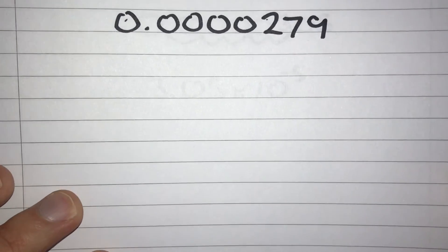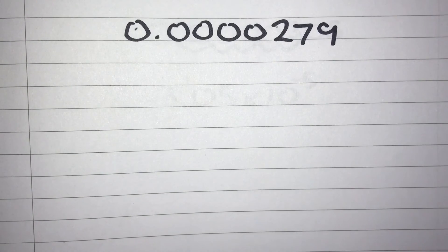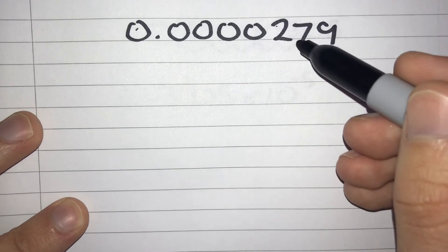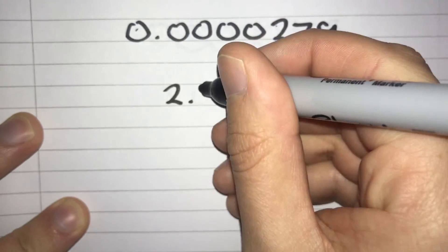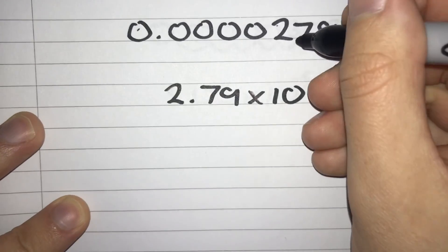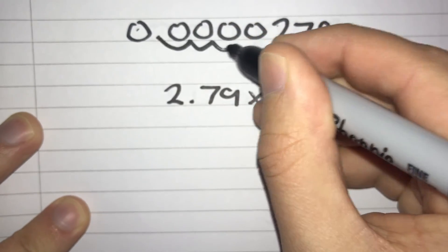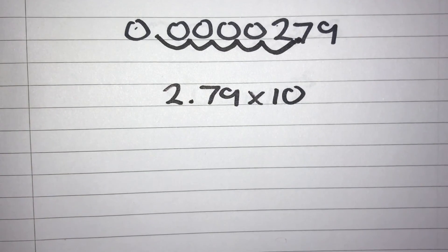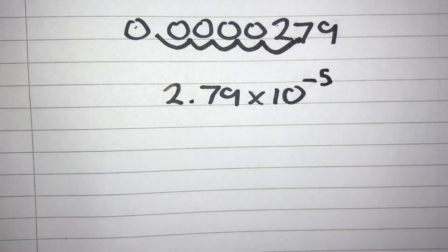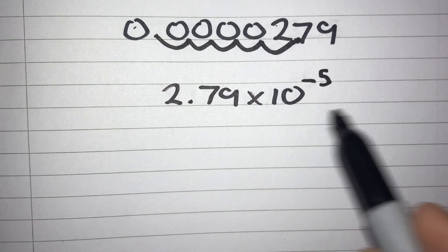Here's one more example — this time we've got a really small decimal number to write in standard form. We move our decimal point to just after our first significant figure, which is after this 2, giving us 2.79. Our decimal point started here and has ended up just after this 2. Counting the spaces: 1, 2, 3, 4, 5 spaces. But because it's a really small number, our power is negative 5, not positive 5. So our answer is 2.79 times 10 to the power of minus 5.